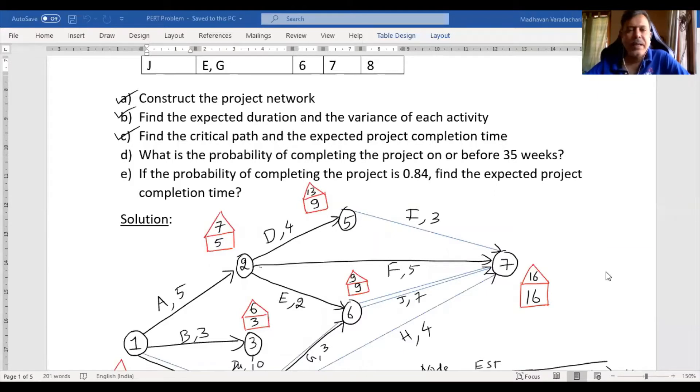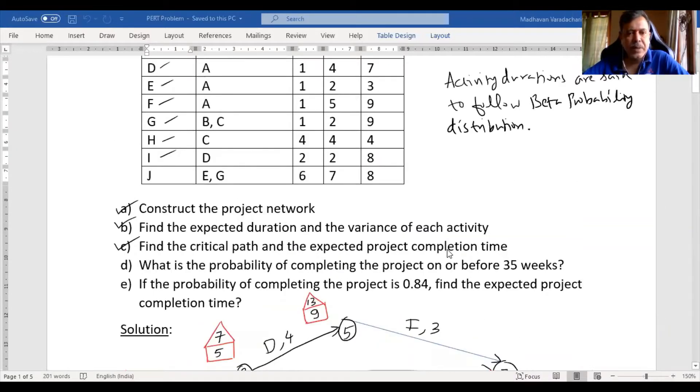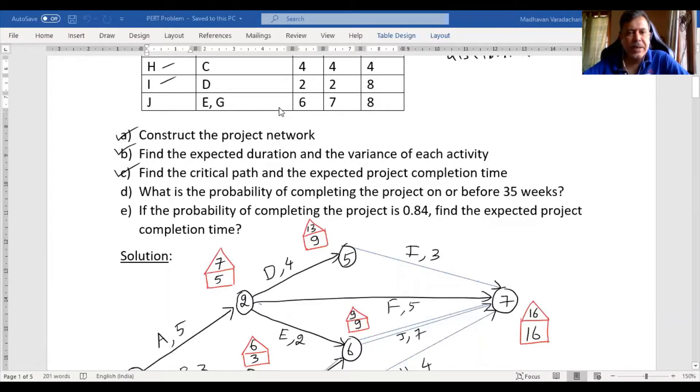Hello everyone. This is in continuation to our project evaluation and review technique, one numerical problem what we took. In the previous videos, we did initially the construction of a project network based on the data given. Then we found the expected duration and variance of each activity in the second video, and in the third video we understood how to do forward pass and backward pass calculations and subsequently how to find the critical path and the expected project completion time. In case you haven't watched those videos, I request you to first watch those three videos before coming to this particular video.